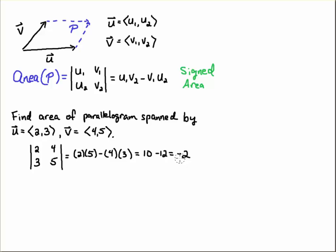So you have to be clear on the question if you want the signed area. If you don't, then you would say the area is the absolute value of that determinant, and then the unsigned area would be 2.